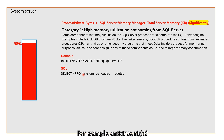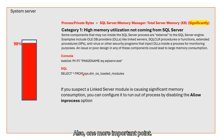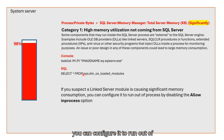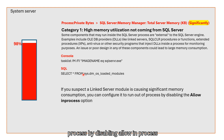For example, antivirus. Also, one more important point: if you suspect a linked server module is causing significant memory consumption, you can configure it to run out of process by disabling the allow in-process option.